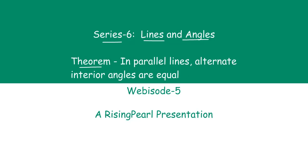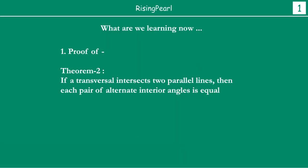So what is this and how can we prove it? Let us find out. Theorem 2 states: if a transversal intersects two parallel lines, then each pair of alternate interior angles are equal.